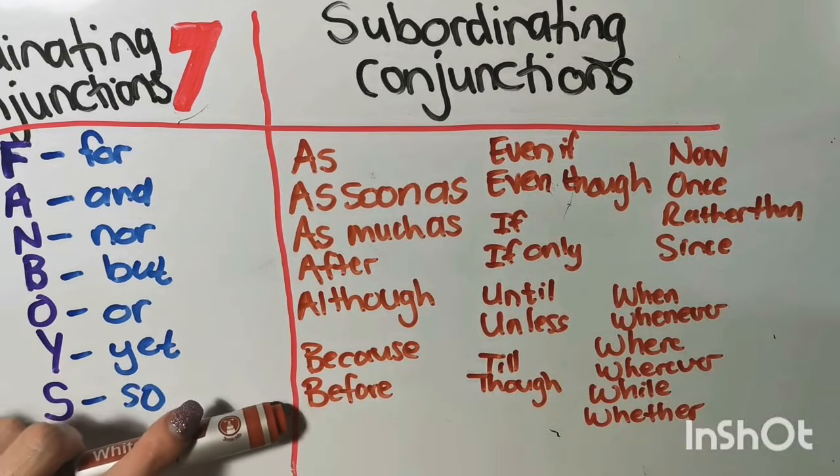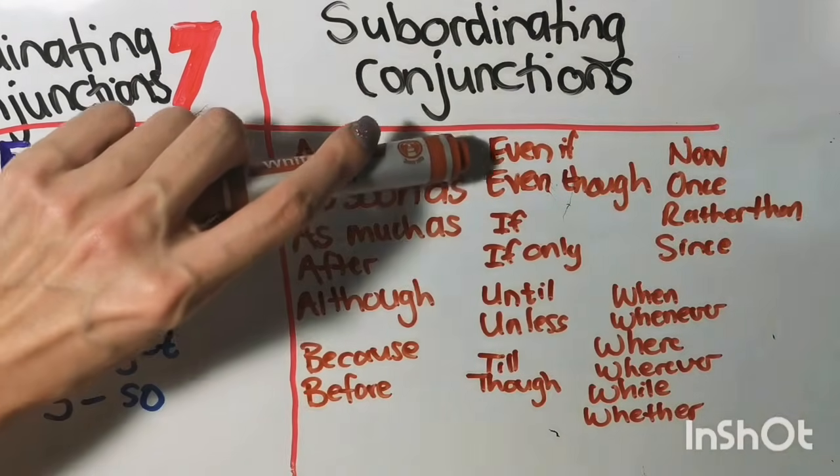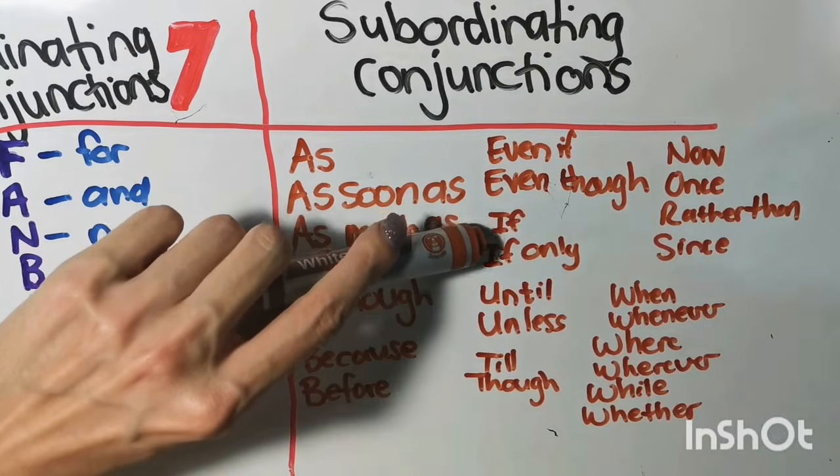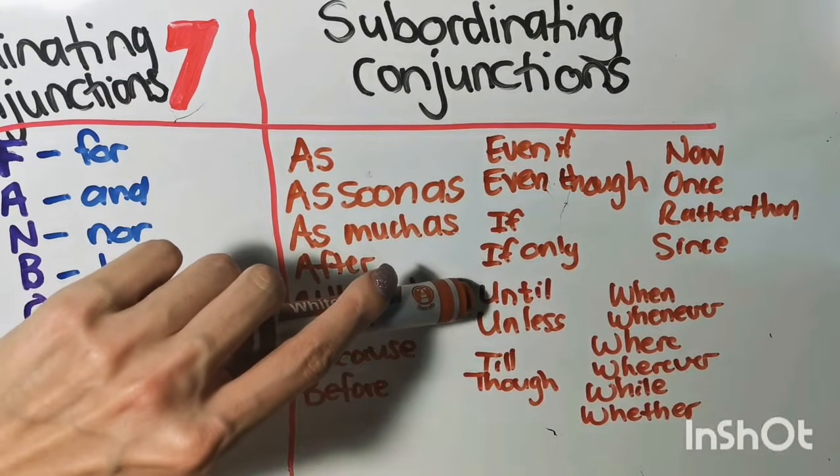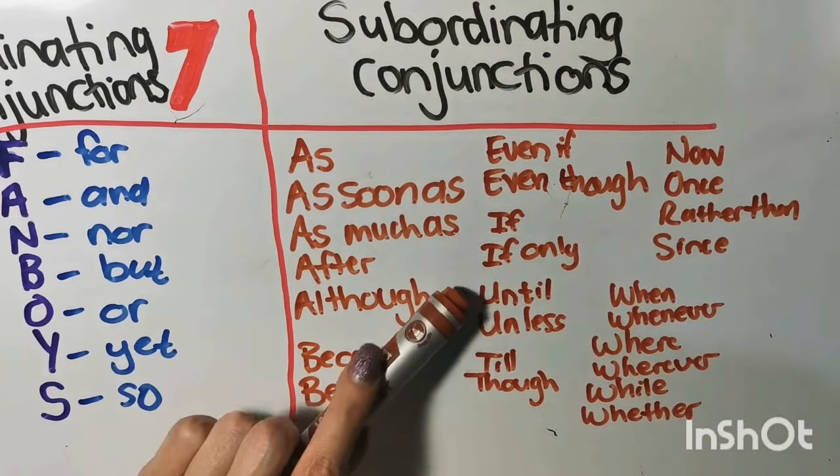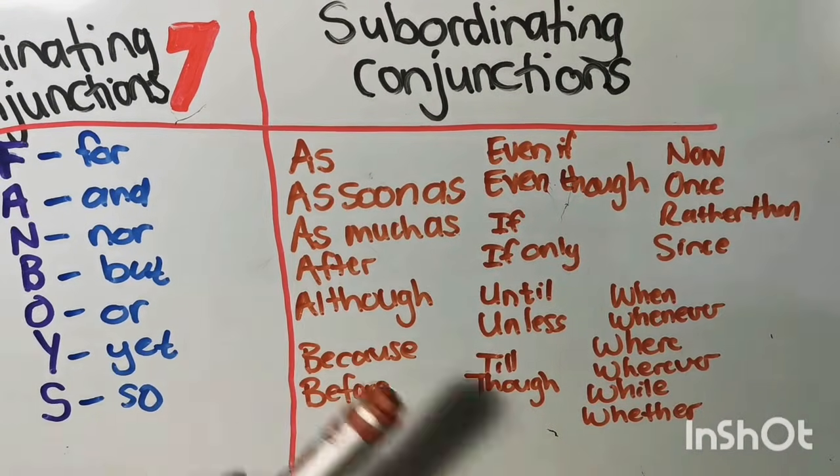Then we have BECAUSE and BEFORE. We have EVEN IF, EVEN THO, IF, IF ONLY, UNTIL, UNLESS. And you can remember TIL with UNTIL and THO with ALTHO.